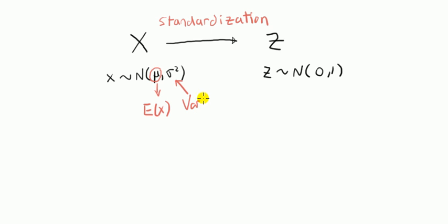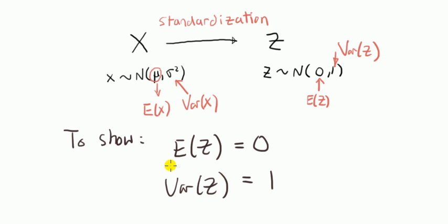this mu here may be rewritten with the expected value of x. That sigma square there is the variance of x. This 0 here, that's the expectation of z. 1 here, the variance of z. So we've stated what we want to show. The expected value of z is 0 and the variance of z is 1.